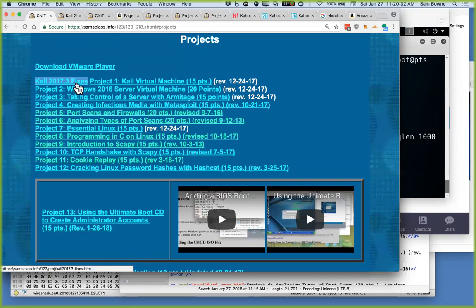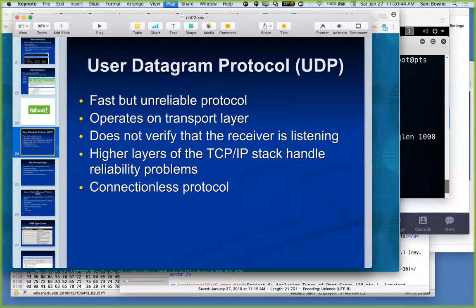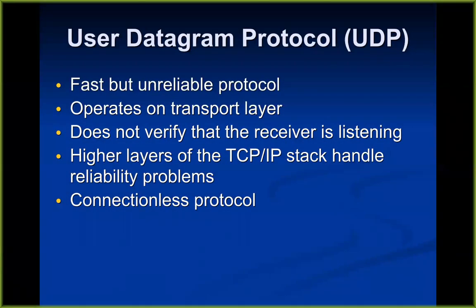UDP is the other transport layer protocol that is commonly used. This is when you want to just send data and you don't really care whether it gets there. It is appropriate for something like a live news stream or a security camera sending data over your internet — it'll typically just send it by UDP. This just sprays the data out and it doesn't know or care whether you're listening, like broadcast radio. They broadcast it; they don't even know if you're listening. That's UDP.